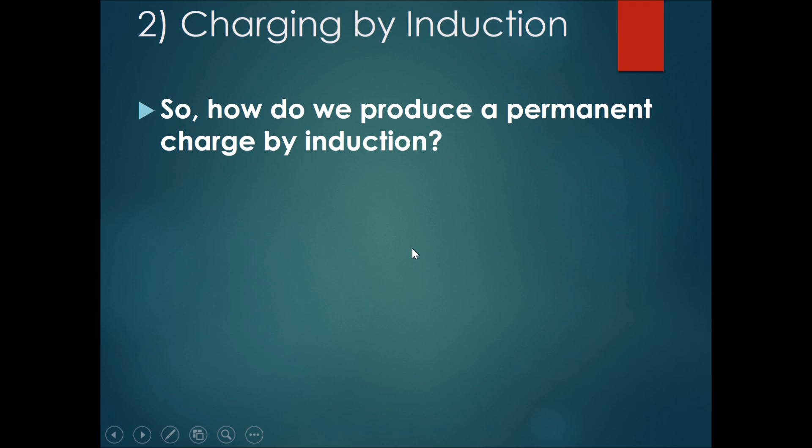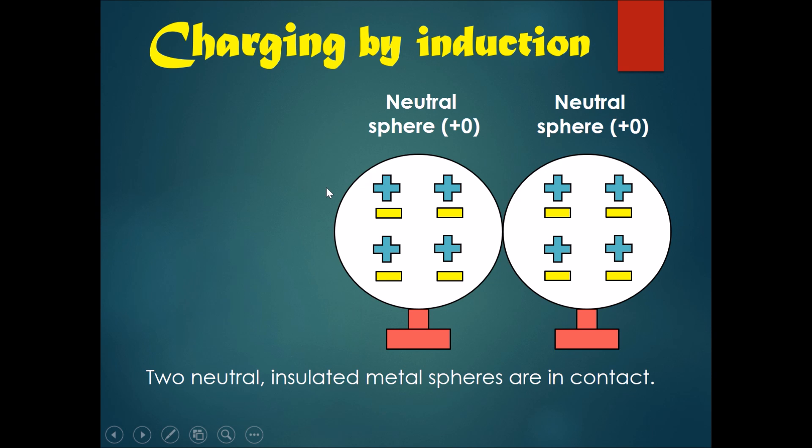So how do we produce a permanent charge by induction without having to hold a charged rod near the object at all times? One way is this: first, get two neutral spheres that are insulated at their base.